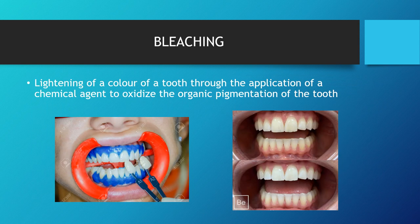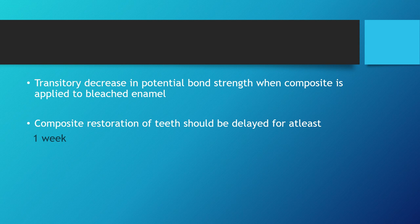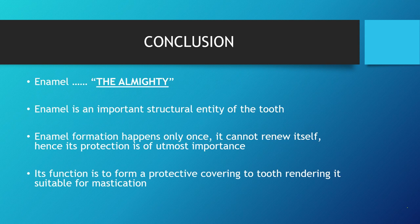Bleaching is the lightening of tooth color through application of a chemical agent that oxidizes the organic pigmentation of the tooth — converting a yellowish stain to a whiter appearance. The clinical significance is that bleaching causes a transitory decrease in the potential bond strength when composite restorations are placed on bleached enamel. Therefore, composite restorations should be delayed for at least one week after bleaching.